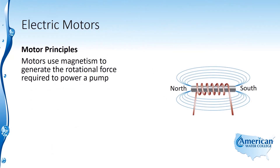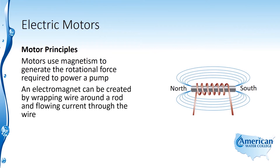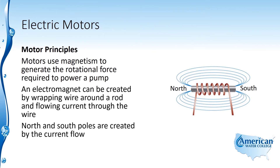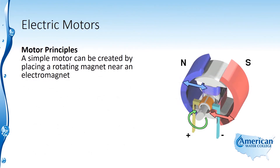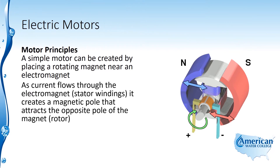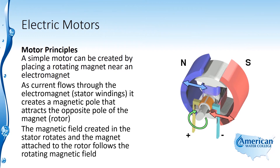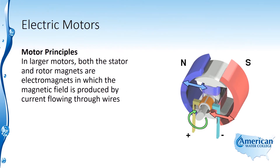Motors use magnetism to generate the rotational force required to power a pump. An electromagnet can be created by wrapping wire around a rod and flowing current through the wire. North and south poles are created by the current flow, and as the current direction changes, so does the polarity of the magnet. A simple motor can be created by placing a rotating magnet near an electromagnet. As current flows through the electromagnet — representing the stator windings — it creates a magnetic pole that attracts the opposite pole of the magnet, or the rotor. The magnetic field created in the stator rotates, and the magnet attached to the rotor follows it. In larger motors, both the stator and rotor magnets are electromagnets, with the magnetic field produced by current flowing through the wire.